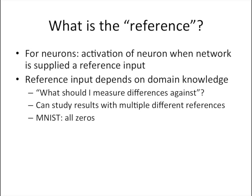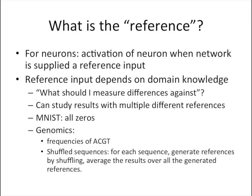For MNIST, we use a reference of all zeros because that is the background of the images. For genomics, we explored two choices of reference. In the first case, we use a reference representing the frequencies of ACGT in the background. In the second case, for each sequence, we generate multiple references by shuffling the original sequence, and our final result is obtained by averaging the results over all the generated references.